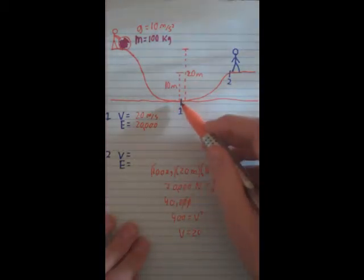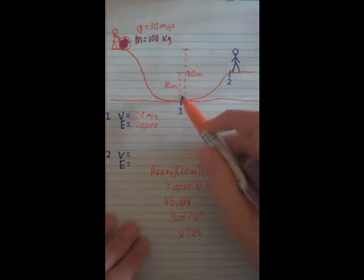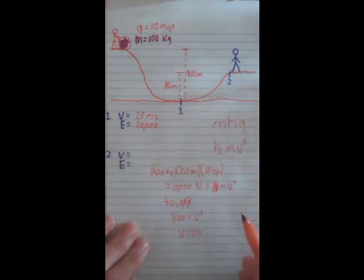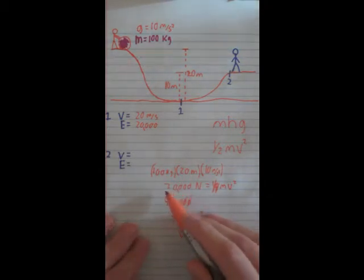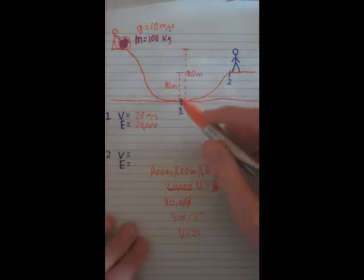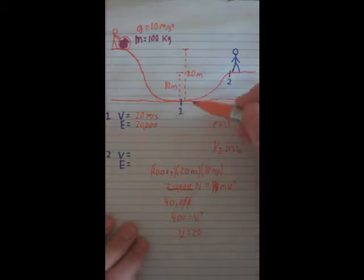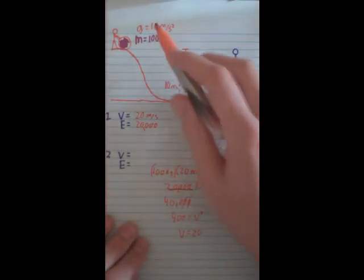Now next part of the problem, it's rolling up to the other guy who is 10 meters above. So now it has to do some work to get up there. So we started with 20,000 joules worth of energy. And to get this high we need to calculate how much potential energy it will have up there.